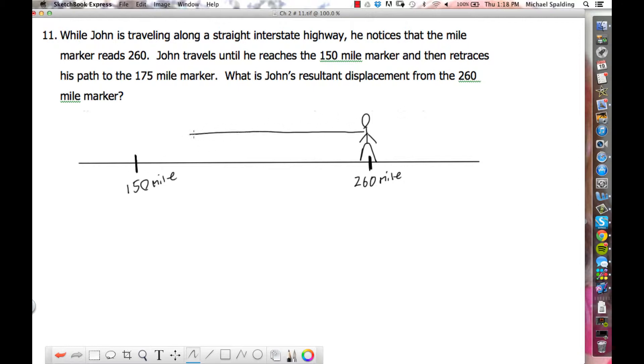He goes from here over to the 150 mile marker and then retraces his path to the 175 mile marker. He comes back like this, and this right here is the 175 mile marker. So he ends right here.